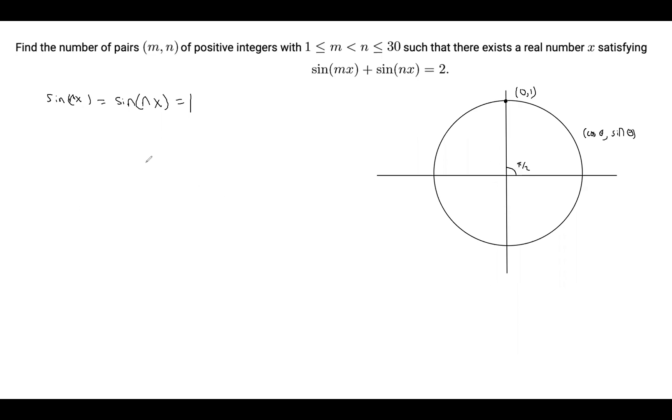So basically, sine of any number is equal to 1 if and only if the number is equal to π/2 plus 2πk for some integer k, not necessarily positive, and we can factor out π/2, and we get this is going to be π/2 times (4k + 1).